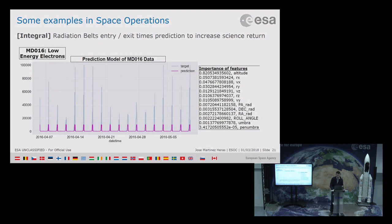Another example is the prediction of entry and exit of radiation belts for the Integral spacecraft. This is quite relevant for them because, due to uncertainty about the effect of radiation belts, they switch off or protect the payload earlier than necessary. If they knew in advance, with high accuracy, what the right time would be, much more science could be returned.